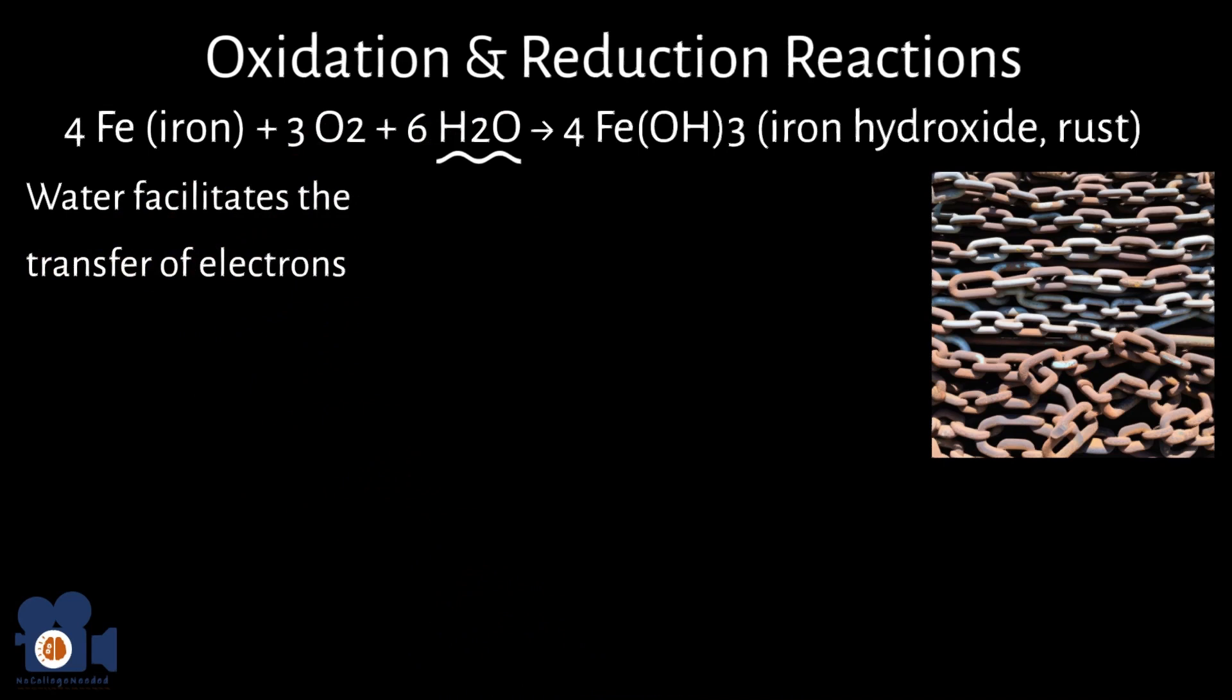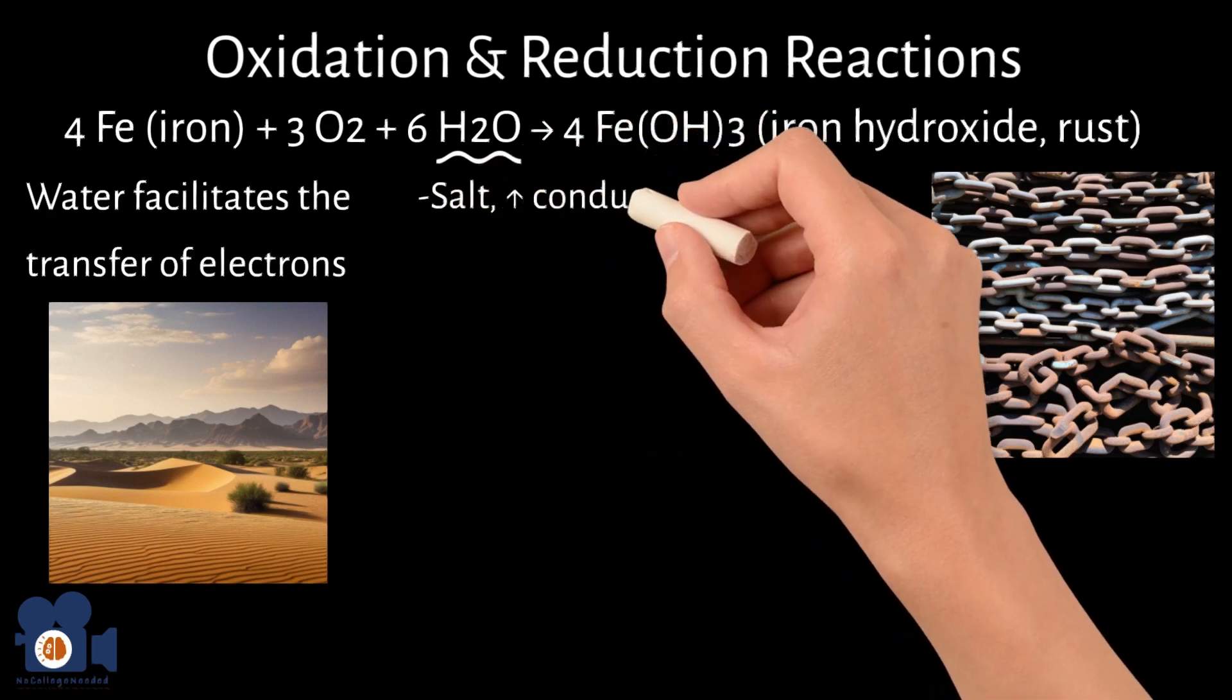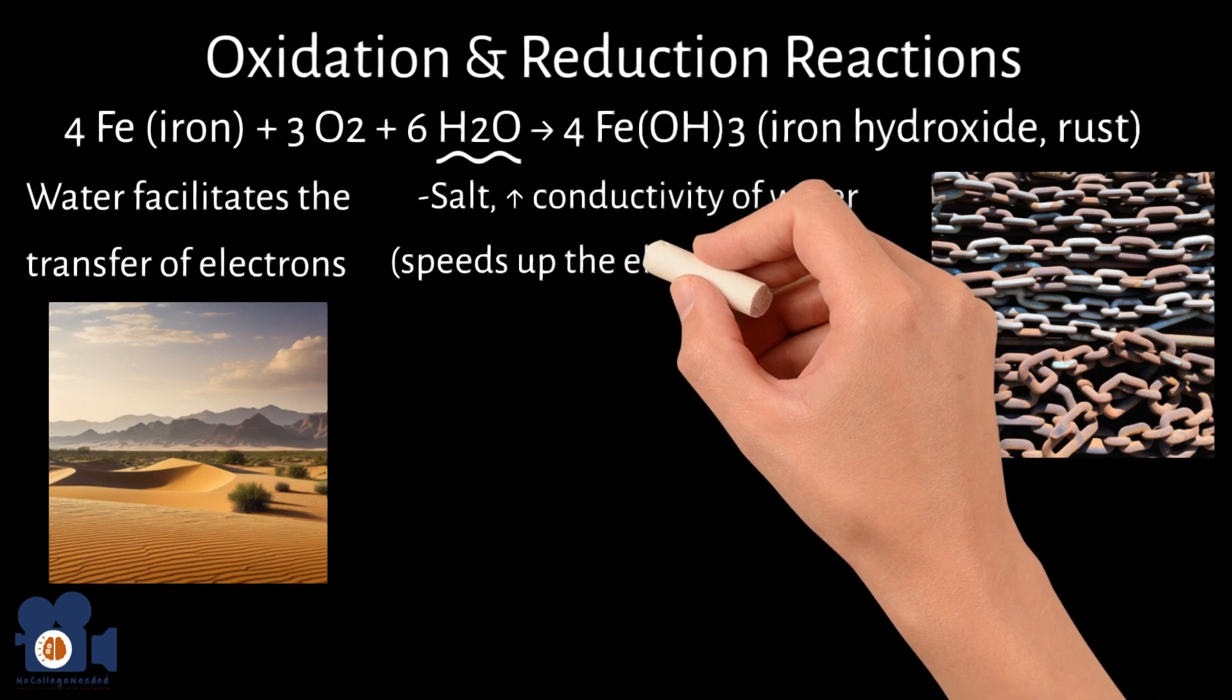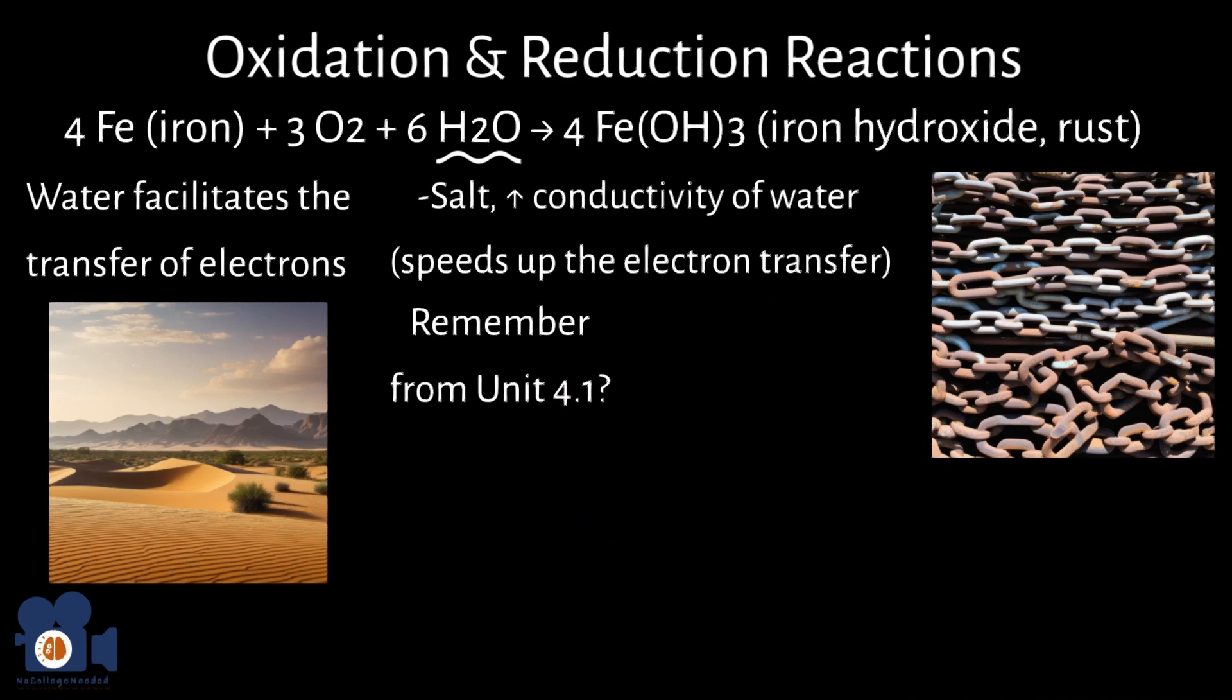This is why there is generally less rust in desert climates, less water. The process of rusting can be accelerated by factors such as exposure to salt, which enhances the conductivity of water and speeds up the electron transfer. This concept should be familiar to you after what you learned about aqueous solution's properties.